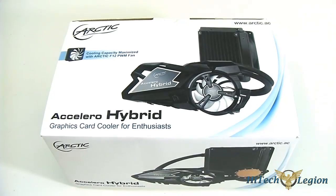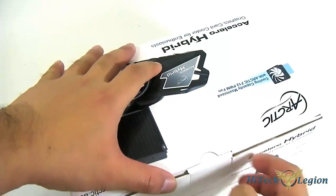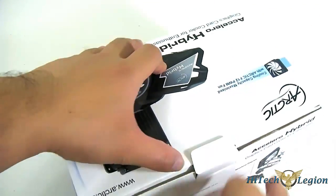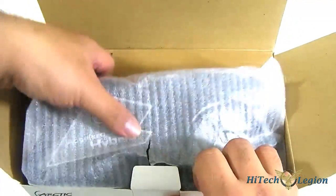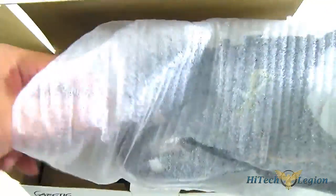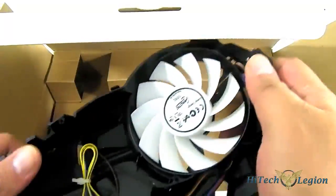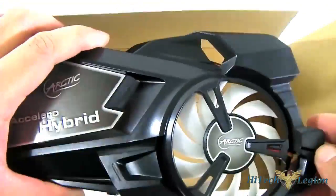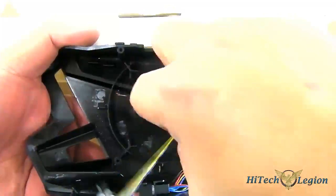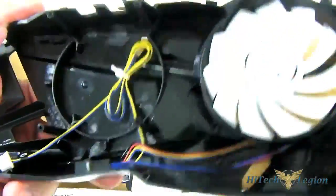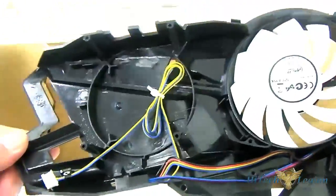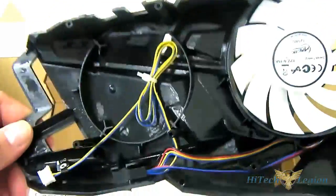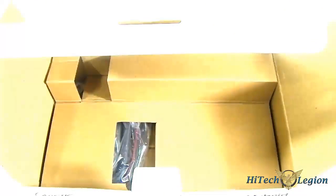Each Accelero Hybrid package comes with the main unit and various accessories. Let's move out this fan shroud. It already has that 80mm fan built into it, and there are some wires for the PWM fan. Also, another fan input there that you can connect the pump and the other fan later on.